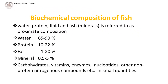Constituents in the edible portion of fish are water, protein, lipid and ash. The analysis of these four basic constituents of fish muscle is often referred to as proximate analysis. The range values for these constituents are: water 65–90%, protein 10–22%, fat 1–20%, mineral 0.5–5%. Carbohydrates, vitamins, enzymes, nucleotides, and other non-protein nitrogenous components are also present in small quantities. Though quantitatively minor components, these play vital roles in maintaining the system and are essential for growth and development.